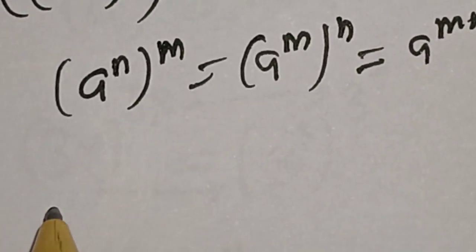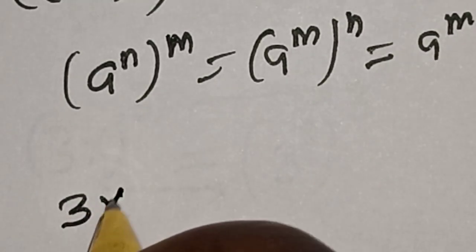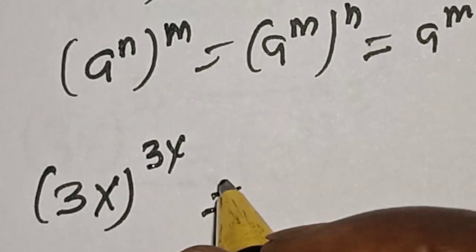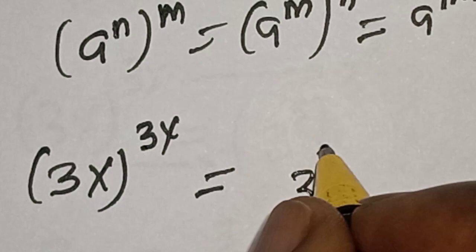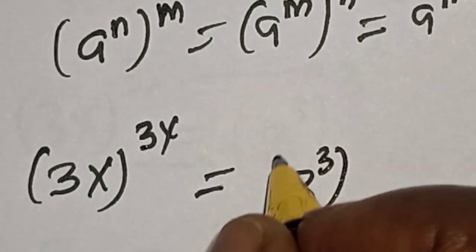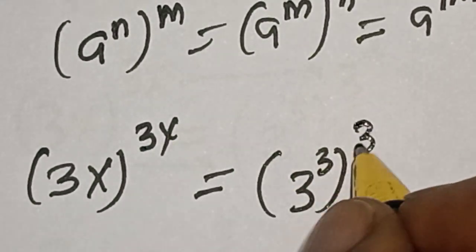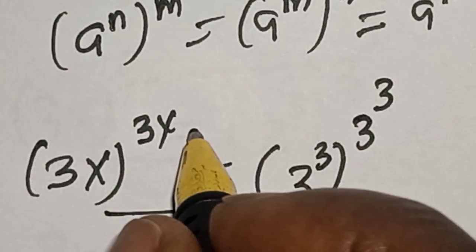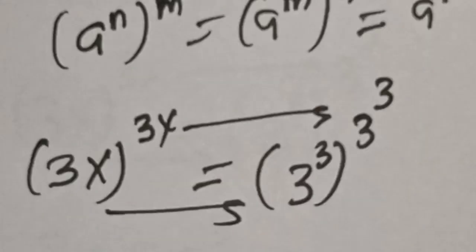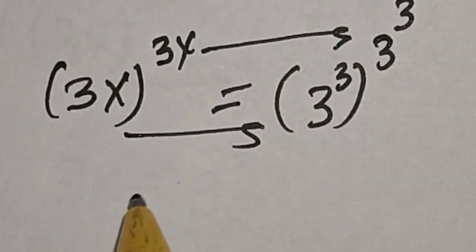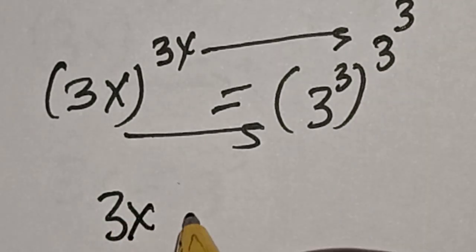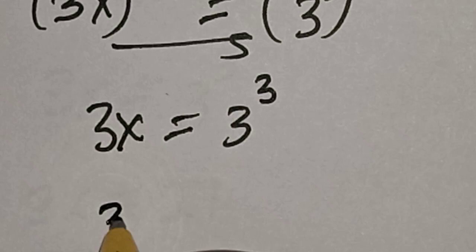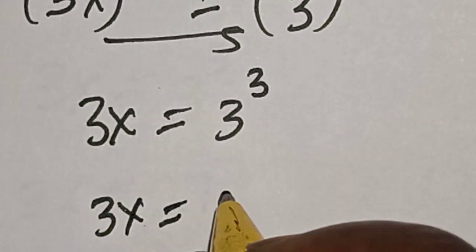Then this becomes 3s raised to power 3s, is equal to 3 raised to power 3 raised to power 3 raised to power 3. By comparing both sides, the base is equal and the exponent is equal, therefore 3s is equal to 3 raised to power 3.